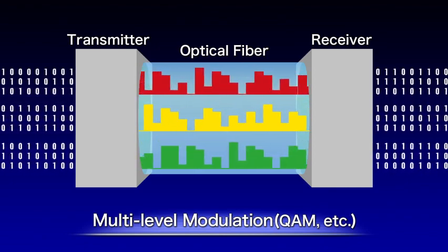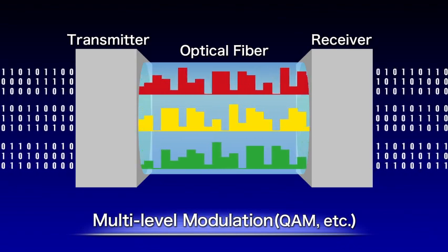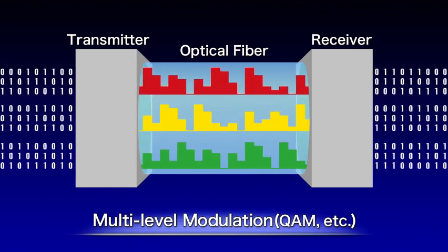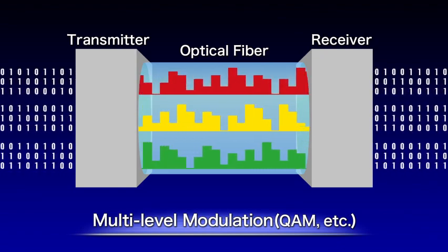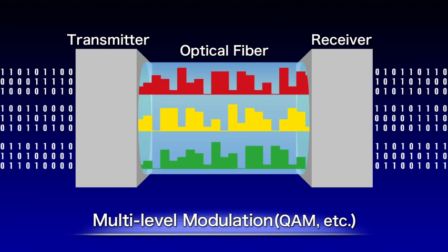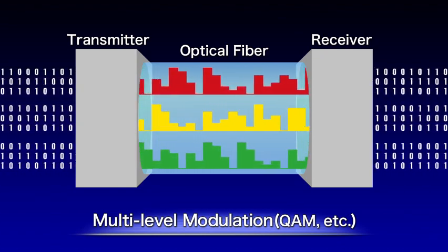This technology allows us to realize a multi-level modulation like Quadrature Amplitude Modulation, or QAM, which controls the intensity, phase, and polarization of light to pack several bits of information into a single optical signal.